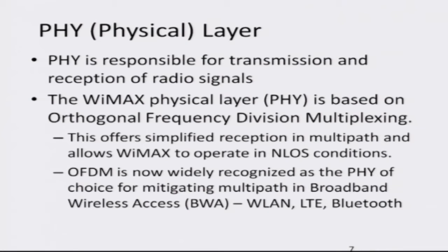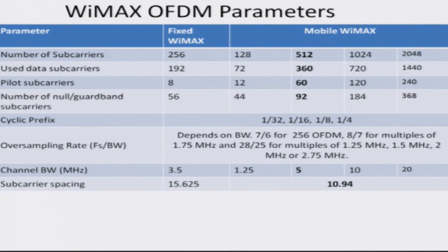OFDM significantly enhances the signal strength and data rate to achieve broadband communication capabilities, and is widely recognized as the choicest strategy for signal transmission in broadband wireless access — be it wireless LAN, LTE, Bluetooth, and so on. This table shows some of the key specs of WiMAX. Looking at the channel bandwidth, it can support bandwidths from 5, 10 to 20 megahertz. By comparison, WCDMA has a bandwidth of about 5 megahertz, so WiMAX's data rate increases proportionately and significantly.